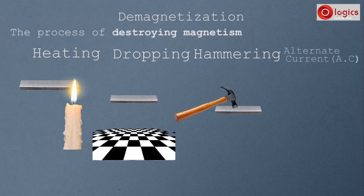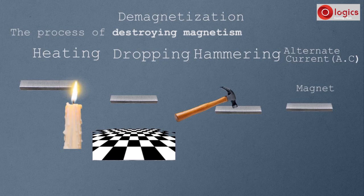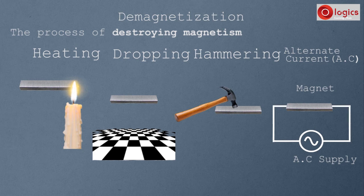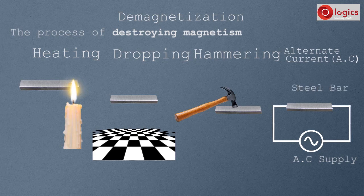Fourth method is passage of alternate current. This is a magnet and this is an alternating power supply. Connect this AC supply to the magnet — AC current directly passes through the magnet. After a while, observe: the magnet loses its magnetism and becomes a steel bar.